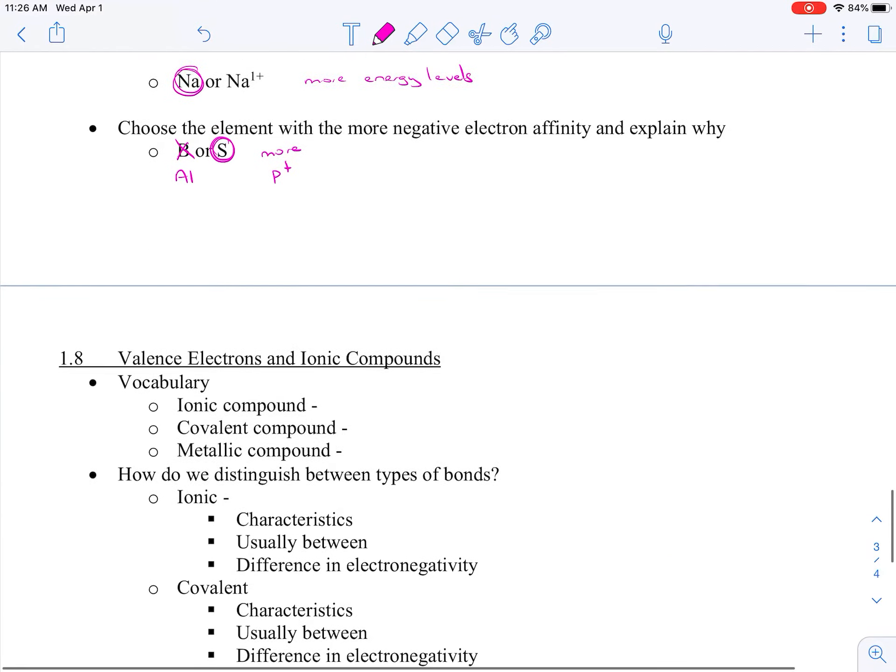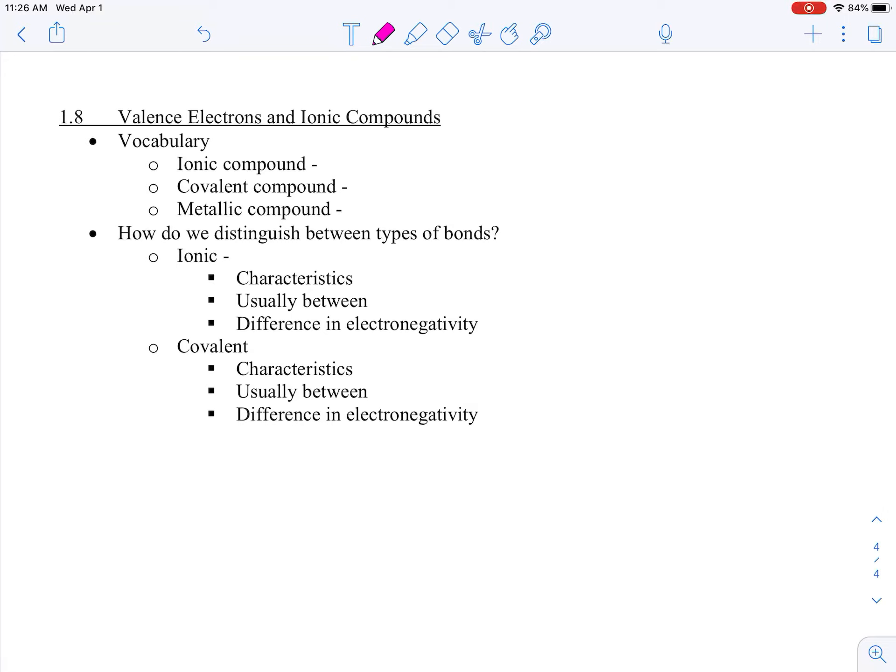Our last section and then we're done with one, valence electrons and ionic compounds. Remember an ionic compound is one that is the electrons are transferred. So we have the electrons transferred. A covalent compound is where we have the electrons being shared. And just a quick review, metallic compound is bond between two metals, and they form a sea of electrons.